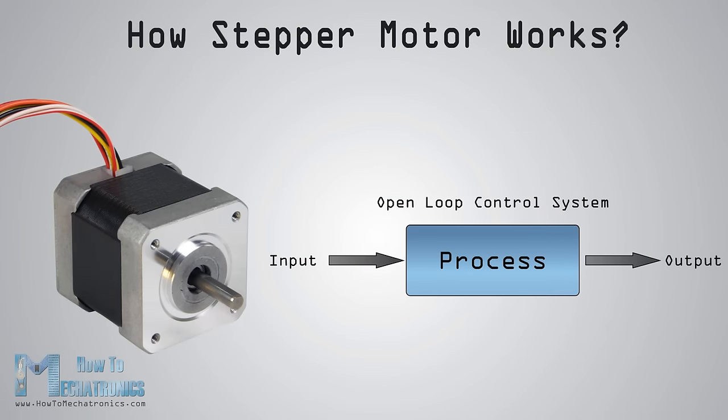A stepper motor is a brushless DC motor that rotates in steps. This is very useful because it can be precisely positioned without any feedback sensor, which represents an open loop controller.